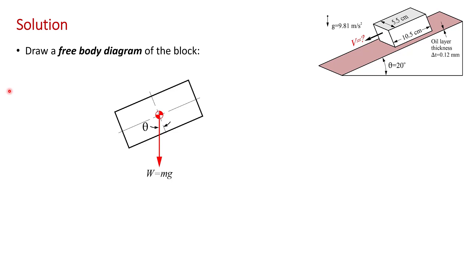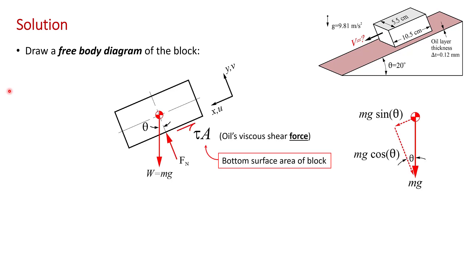There'll also be a force normal to the block, and there's a viscous shear force of the oil on the lower surface of the block, tau A. Remember that tau is a shear stress, so you need to multiply it by the appropriate area to get a force. In this case, the area A is the area of the bottom of the block in contact with the oil.